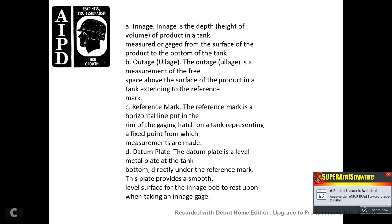The reference mark is a horizontal line put on the rim of the gauging hatch on the top of the tank, representing the fixed point from which measurements are made. The datum point is a level metal point at the tank bottom directly under the reference mark. The datum plate provides a smooth level surface for the bottom bob to rest upon when taking an ingage measurement.